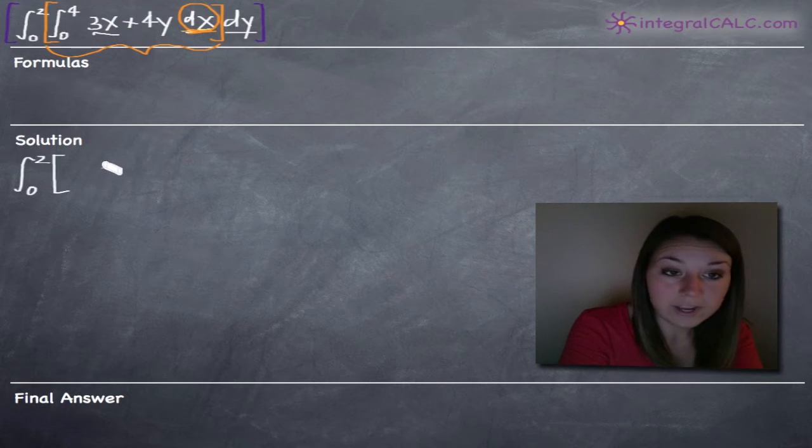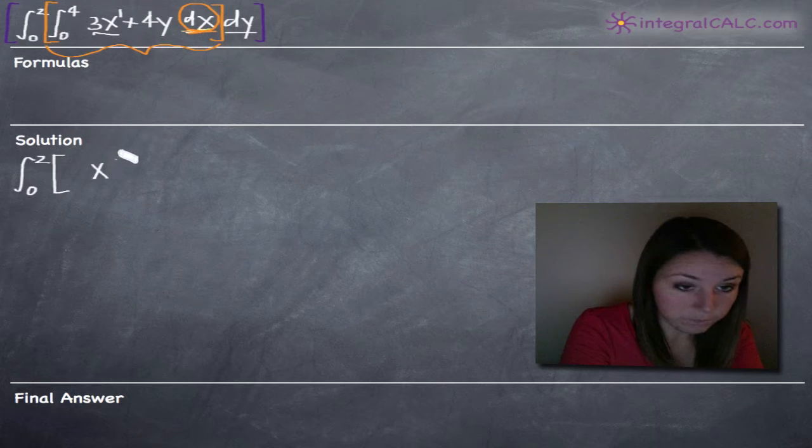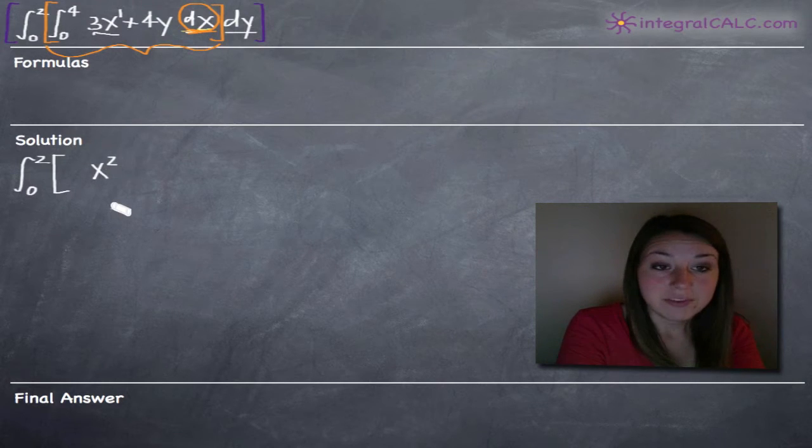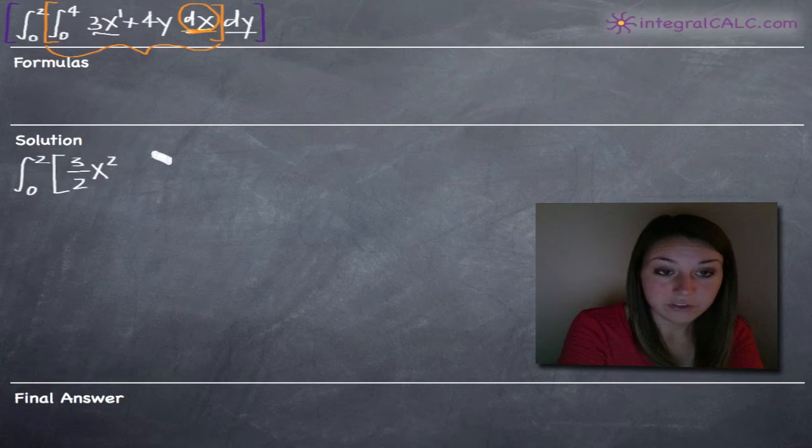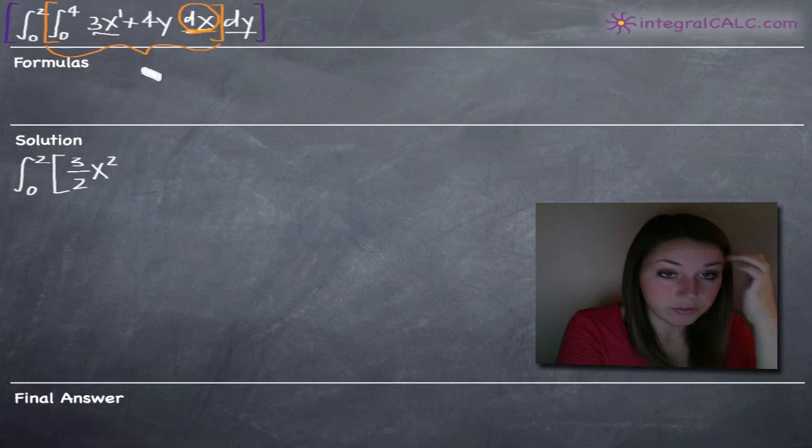We would add 1 to the exponent which is an implied 1, so 1 plus 1 gives us 2x squared, and then we would divide the coefficient 3 by the new exponent 2. So 3 halves x squared is the integral of 3x.